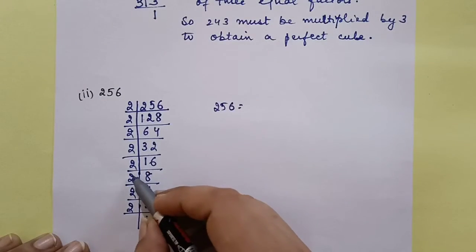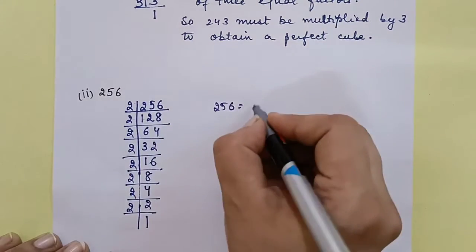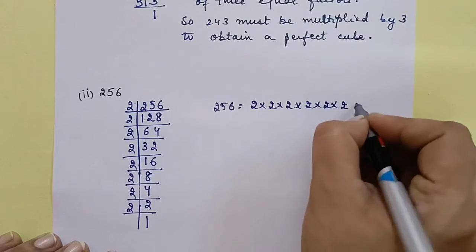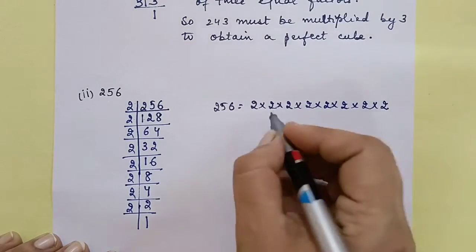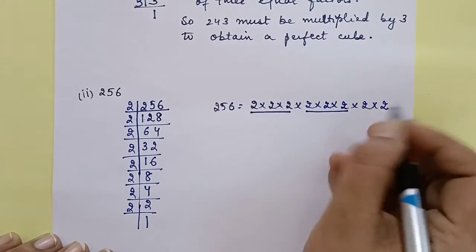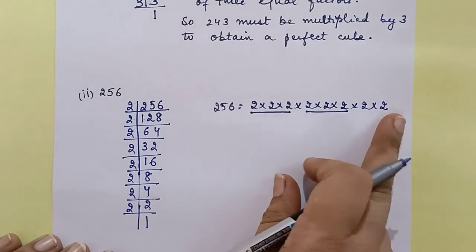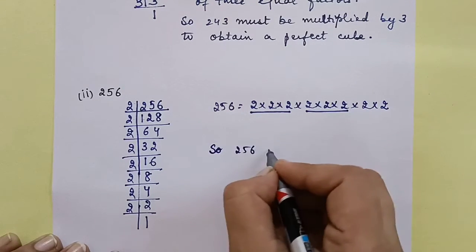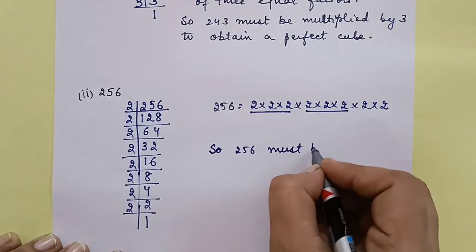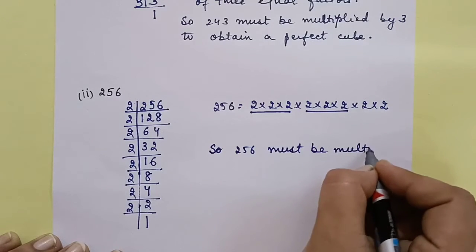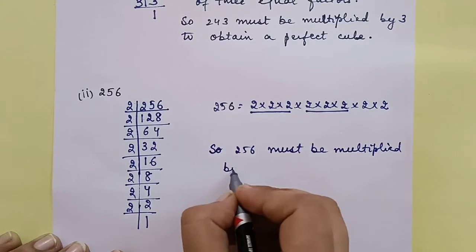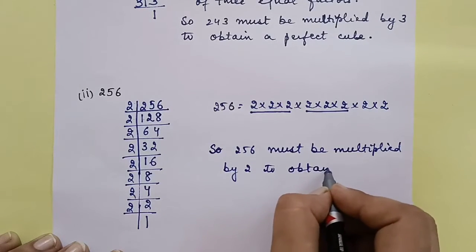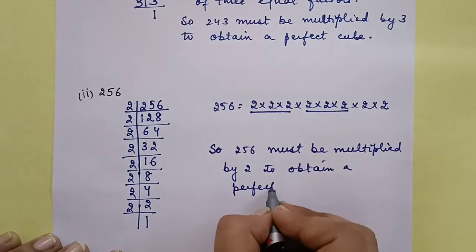We have eight 2s: 1, 2, 3, 4, 5, 6, 7, 8. Now make groups of 3: we get two complete groups of three 2s, and we are left with two 2s. So 256 must be multiplied by 2 to obtain a perfect cube.